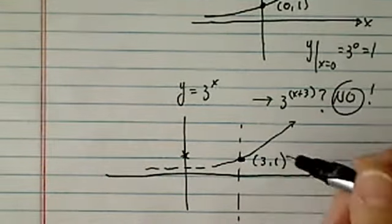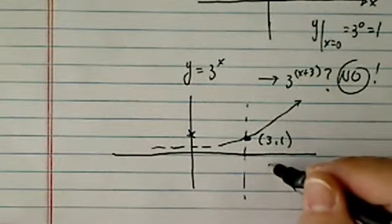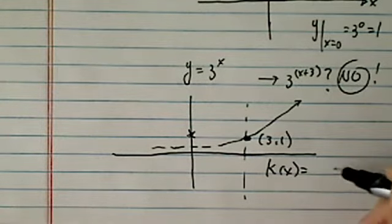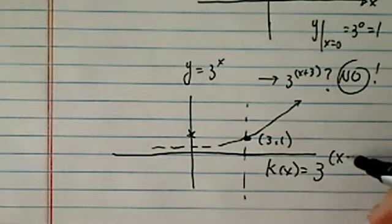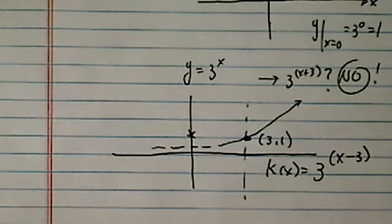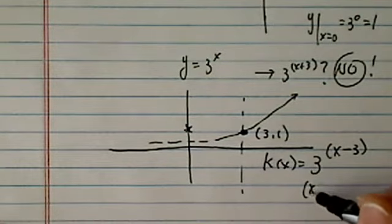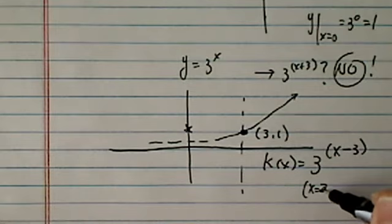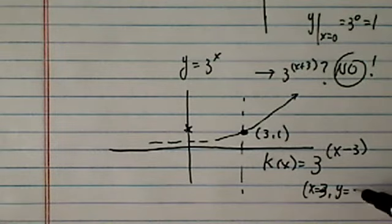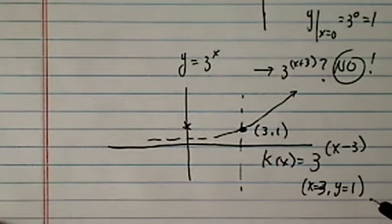In order for this to happen, let's call it k of x, has to be this form: 3^(x-3). Now, if x is equal to 3, we have y is equal to 1, just as we had before.